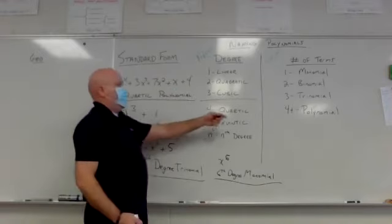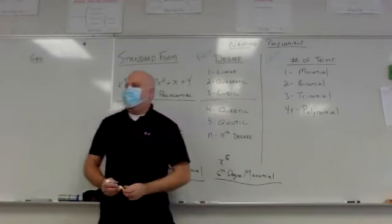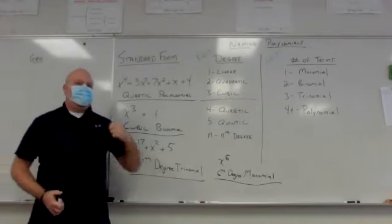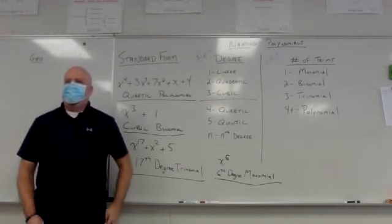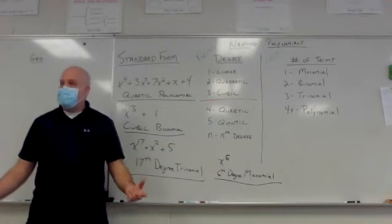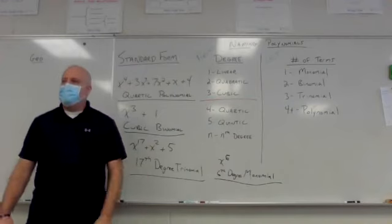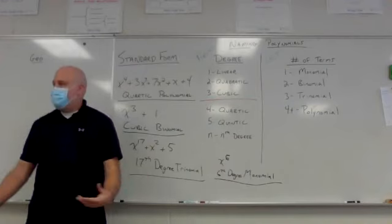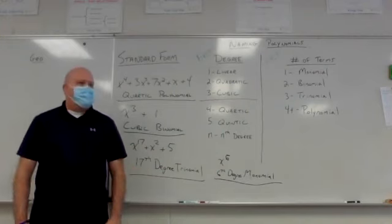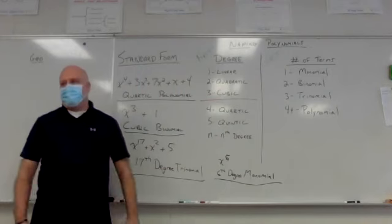With the terms, it's just by prefix. So mono means one, uni means one too, like unicycle. But we use mono for monomial. Bicycle, two wheels, binomial, two terms. Tricycle, three wheels, trinomial, three terms. And then poly just means many, so four or more is polynomial.